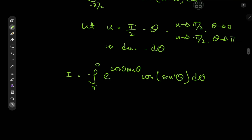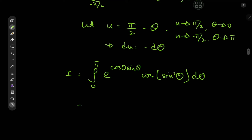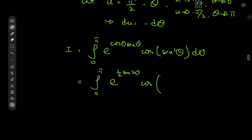We get rid of the negative sign by switching the limits of integration. We then recall that cosine times sine is one half of the sine of two times that angle. So we have the integral from 0 to π of e to the one half of sine 2θ times the cosine of sine squared θ, where sine squared equals (1 minus cosine 2θ) divided by 2, dθ.